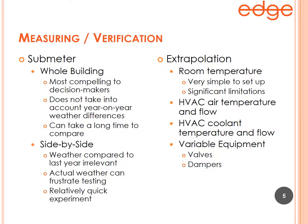Another sub-metering strategy is side by side: take two adjacent hotel rooms facing the same direction with the same load, both empty, with the same set points — one has window film, one does not. Sub-meter just the air conditioning system on each room. The biggest advantage is it makes last year's and this year's weather irrelevant, since you're comparing in real time in the same weather situation.